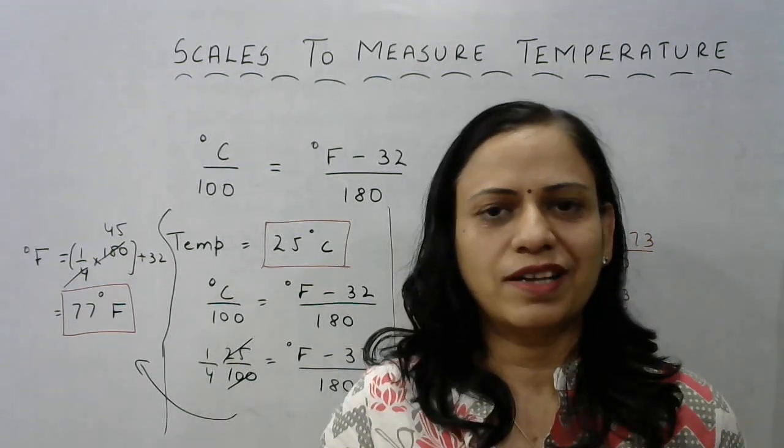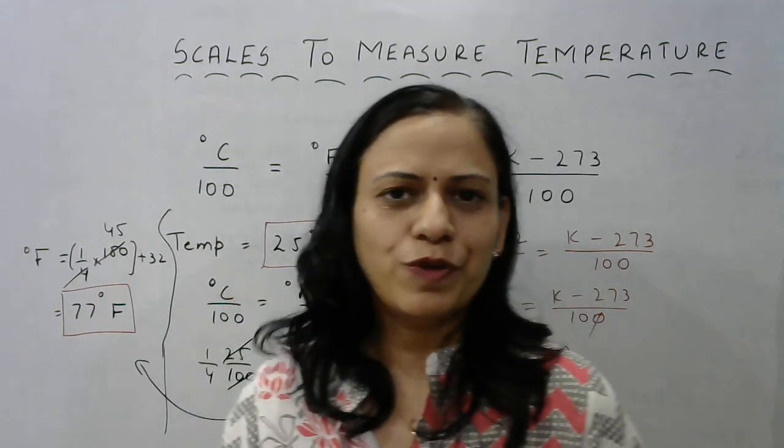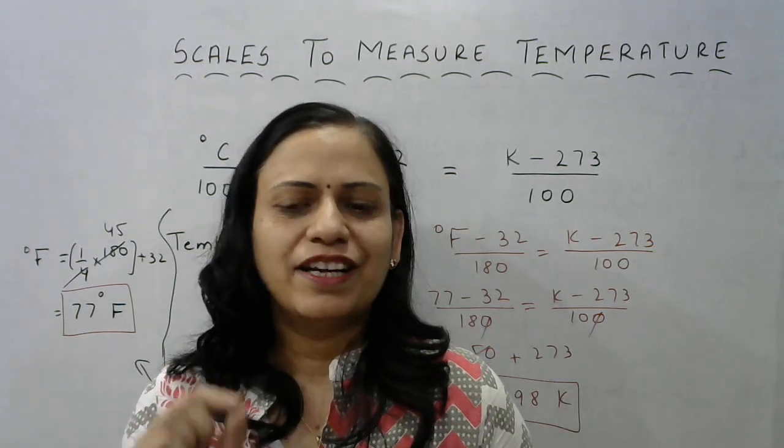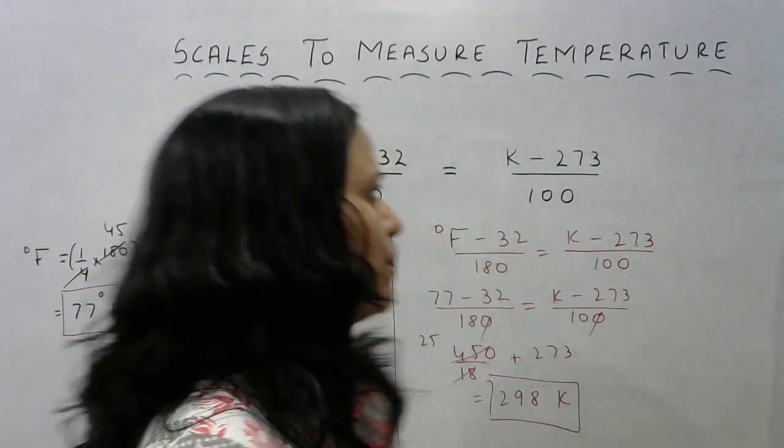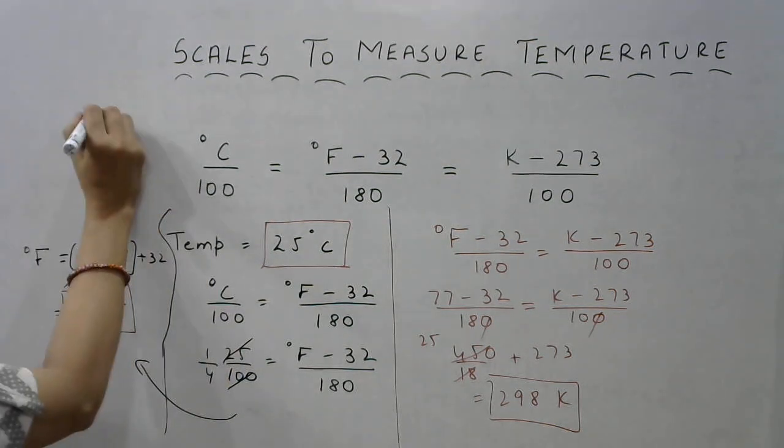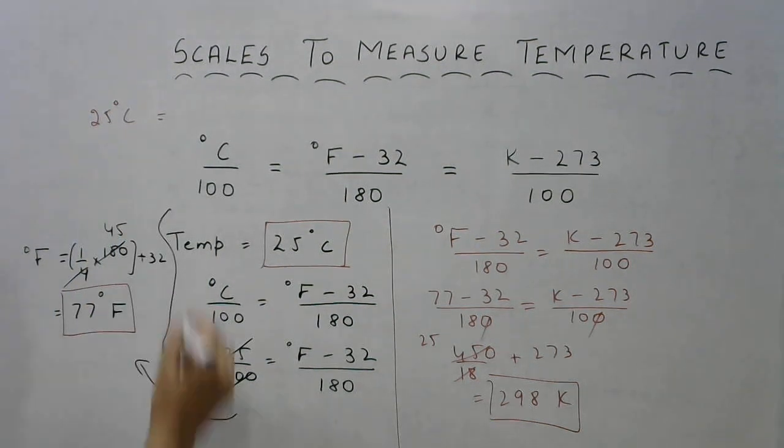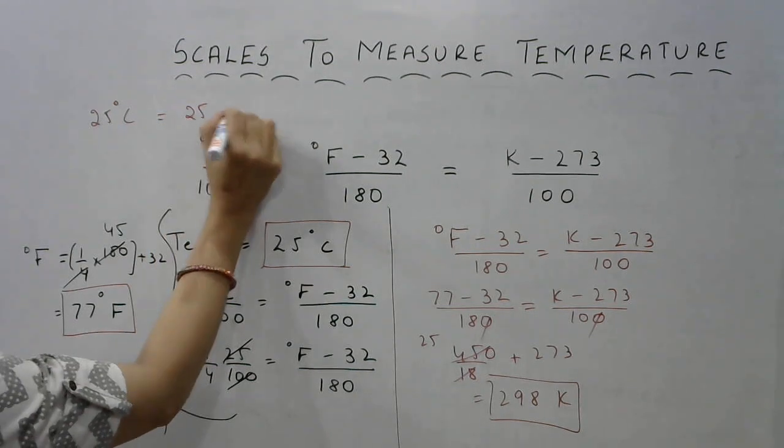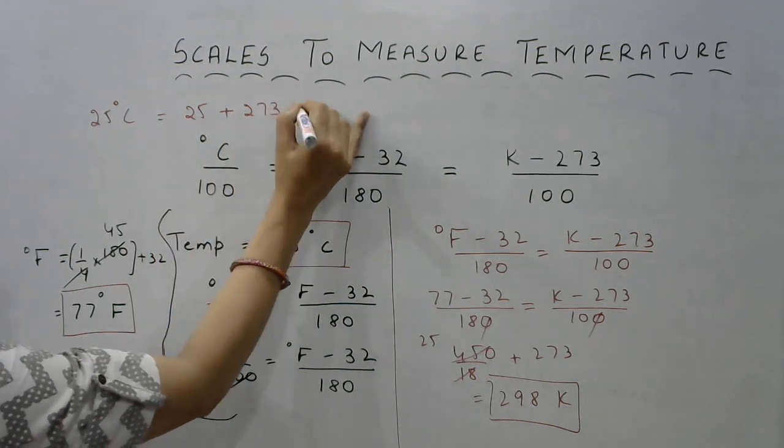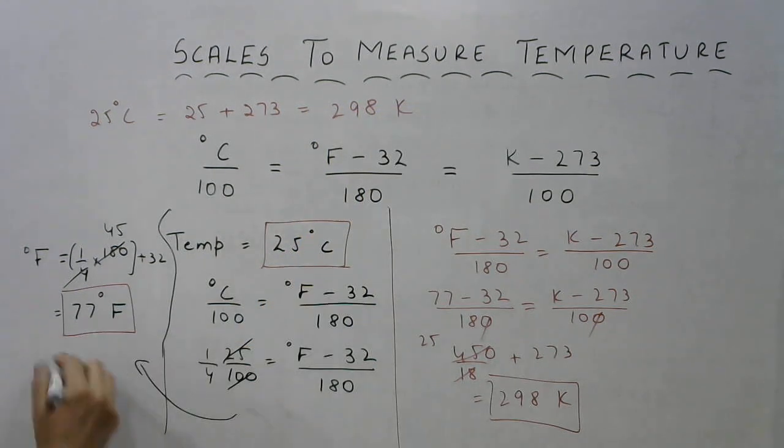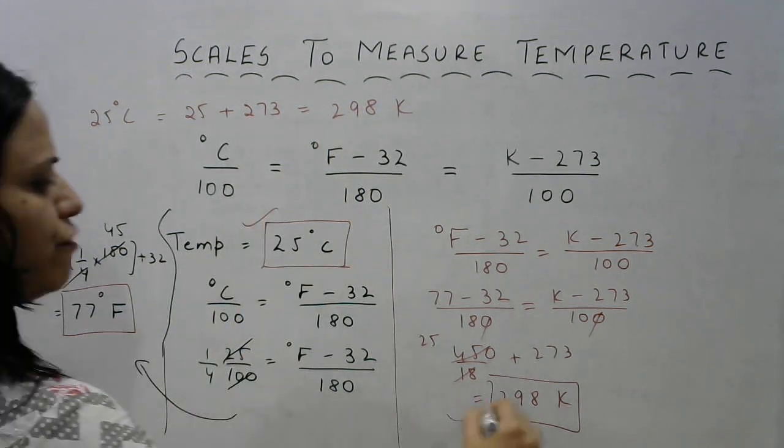And the easiest thing is to convert Celsius to Kelvin. How do we do that? No need of this formula. Simply add 273 to it. So suppose 25 degrees Celsius is equal to how many Kelvin? What do we do? It becomes 25 plus 273 and that gives you 298 Kelvin and you can verify your answers from here. Isn't that simple?